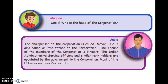Uncle, who is the head of the corporation? The chairperson of the corporation is called the Mayor. He is also called the father of the corporation. The tenure of the members of the corporation is five years. Indian Administrative Service officers and similar rank holders are appointed by the government to the corporation.